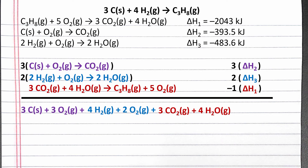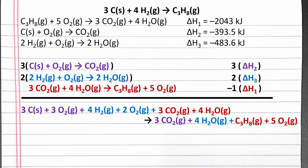These are all of our reactants from the three steps. For products, we have three moles of carbon dioxide from the first reaction, four moles of water vapor from the second reaction, and one mole of propane gas and five moles of oxygen gas from the third reaction. This should be all our products from all three reaction steps.